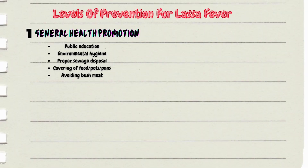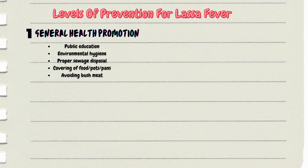The next case is Lassa fever, a viral hemorrhagic fever. Most other viral hemorrhagic fevers will have similar prevention levels, so knowing Lassa fever can serve as a useful framework. For level one, general health promotion, number one is public education — the public needs to know about Lassa fever, how it's transmitted, the early symptoms, diagnosis, treatment, and most importantly how it can be prevented. Other measures include environmental hygiene, proper sewage disposal, proper covering of food, and avoiding eating bush meat.